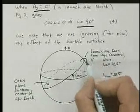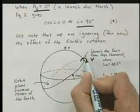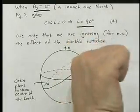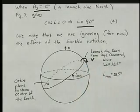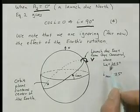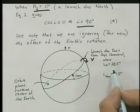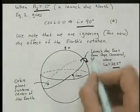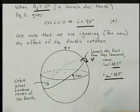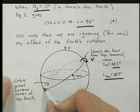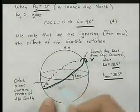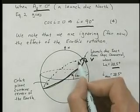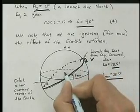So here's the situation. I'm showing a velocity vector into the page by this half circle with an arrow, so by right hand rule that's pointing into the page. And we launch from Cape Canaveral where the latitude of the launch site is twenty eight point five degrees, and if we launch straight east we'll have an inclination of twenty eight point five degrees. This is again a great circle, just as the equator is a great circle, and this orbit plane contains the center of the earth.